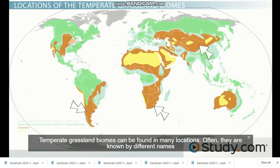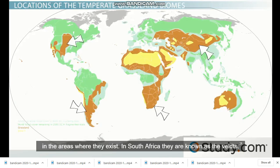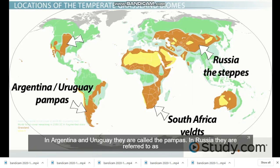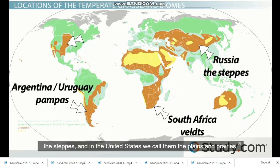Temperate grassland biomes can be found in many locations, and they are often known by different names in the areas where they exist. In South Africa, they are known as velts. In Argentina and Uruguay, they are called pampas. In Russia, they are referred to as the steppes. And in the United States, we call them the plains and prairies.